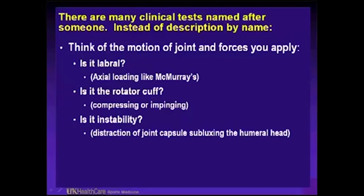If it's a labral problem, we want to apply axial load — like a McMurray's of the knee for a meniscus tear. If it is a rotator cuff problem, you have to think of it as a compression or impinging problem, so anything that you do to lessen the subacromial space will cause a problem. Or is it an instability problem — distraction of the capsule, subluxing the humeral head?